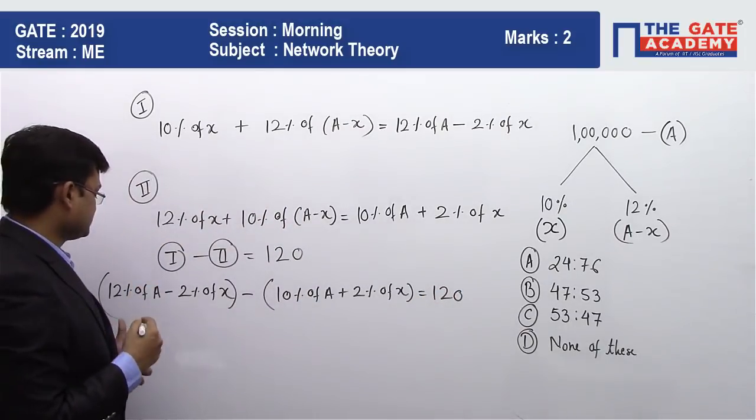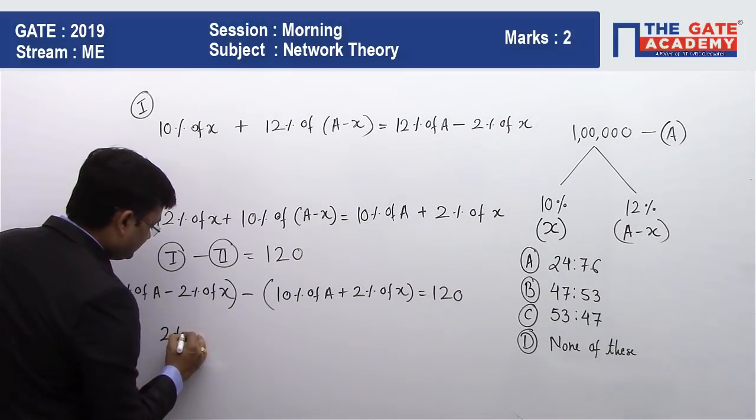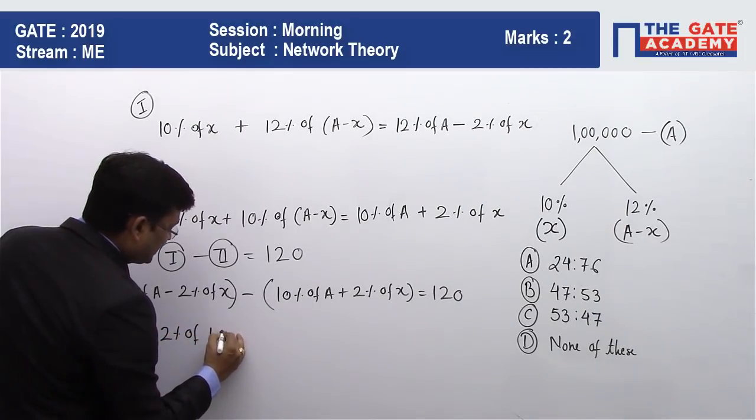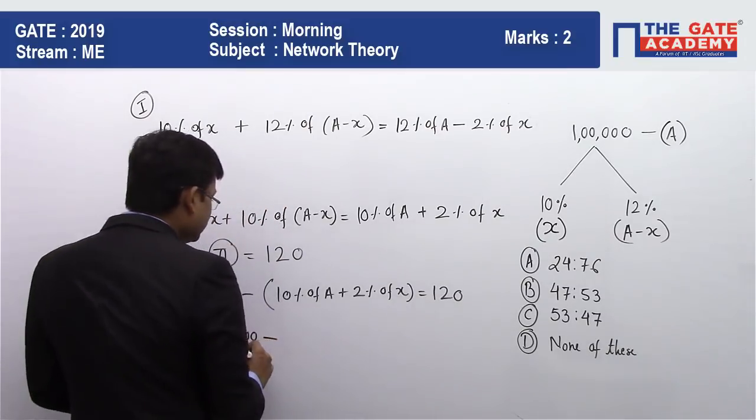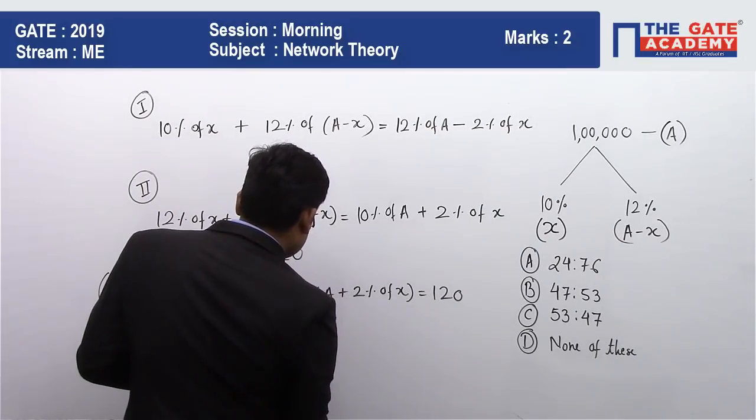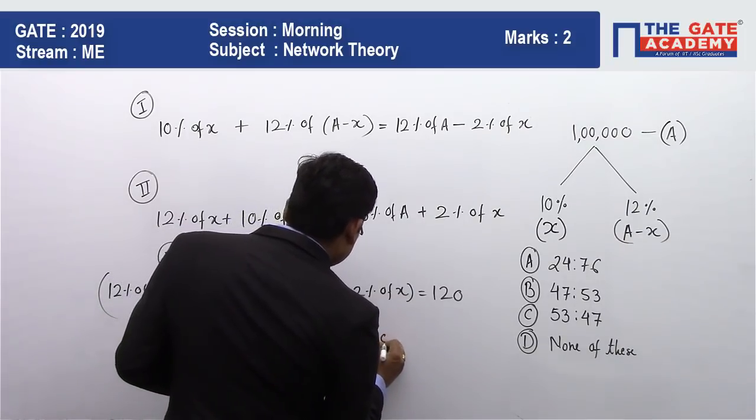Now I will simplify this equation. When simplified, we get: 2% of A minus 4% of x equals 120. Since A is 1,00,000, this becomes: 2% of 1,00,000 minus 4% of x equals 120.